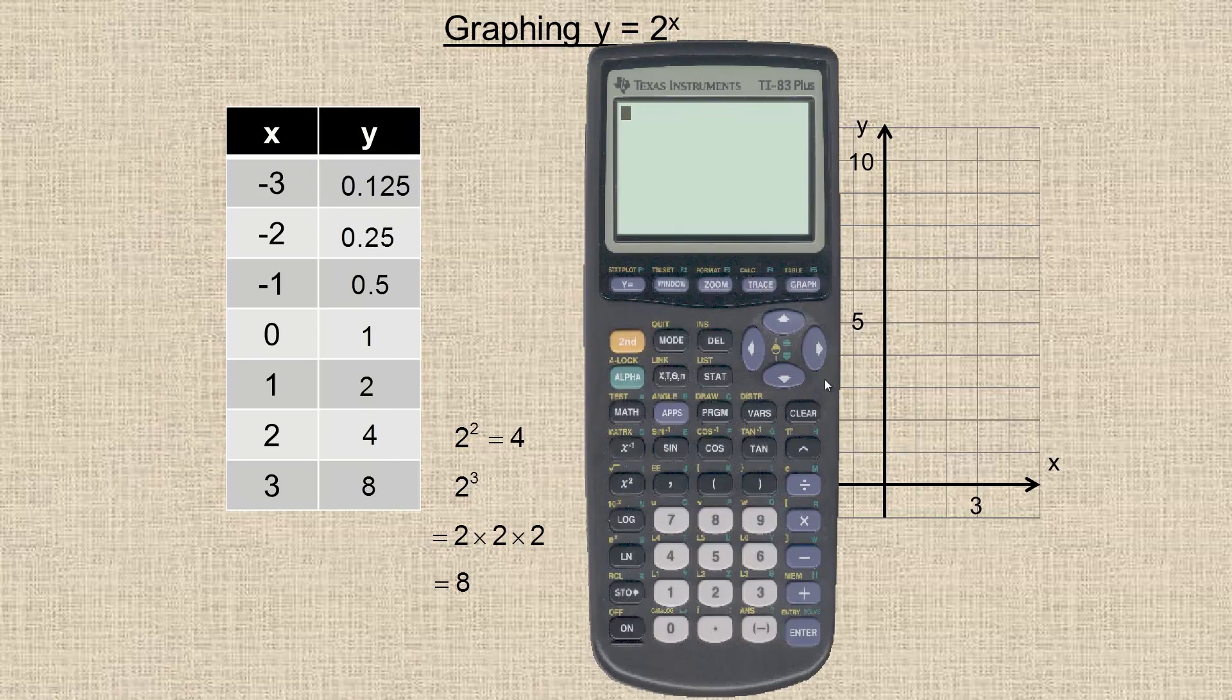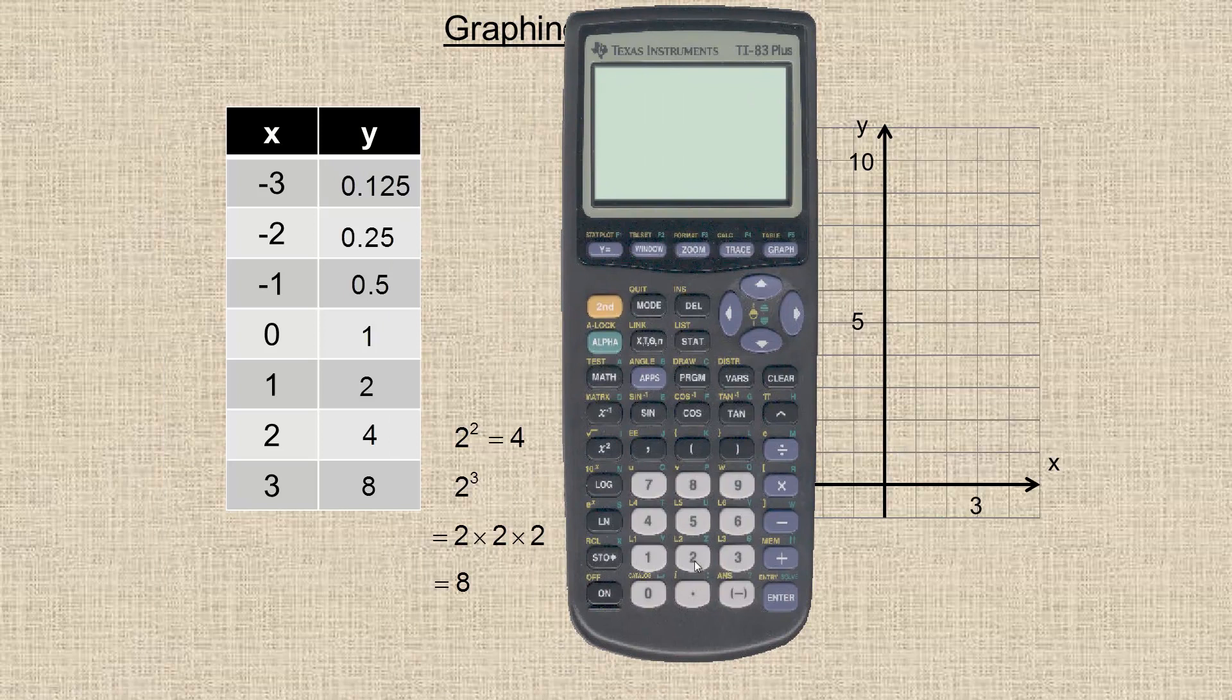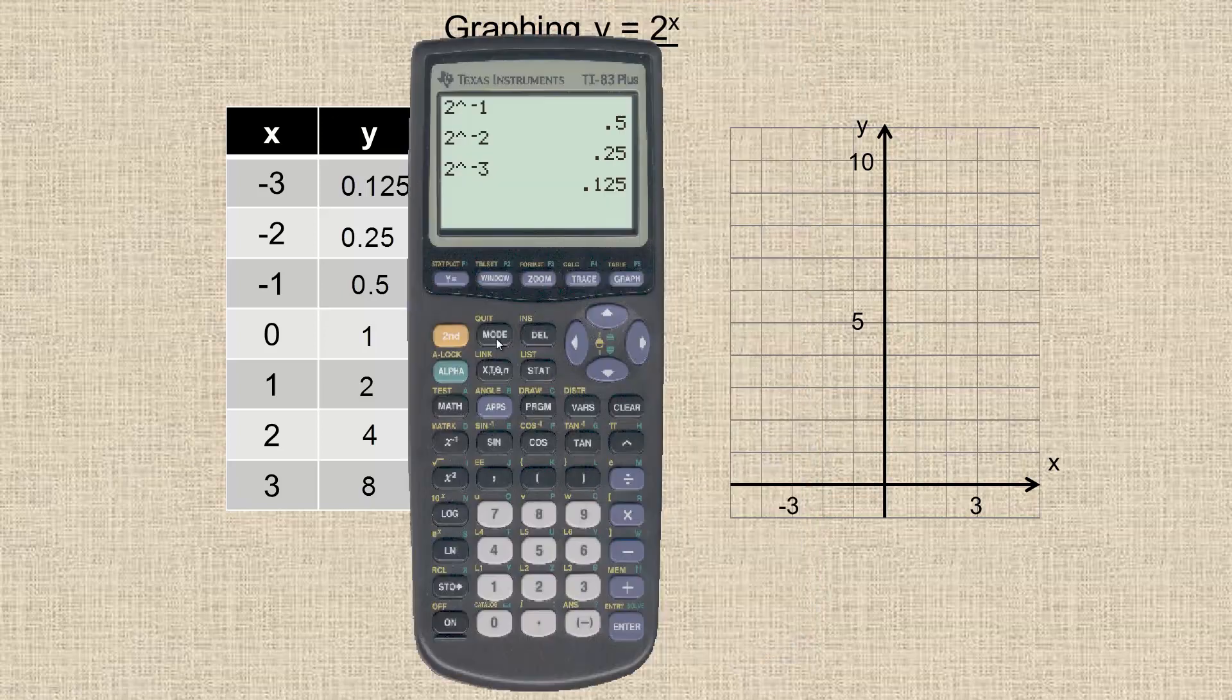And maybe I'll show that calculation here. So 2 raised to the power of negative 1, just to verify that it is 0.5. And 2 raised to the power of negative 2 is 0.25, so that's where that comes from. And 2 raised to the power of negative 3 does give me the 0.125.